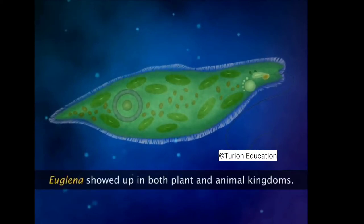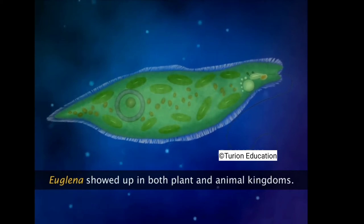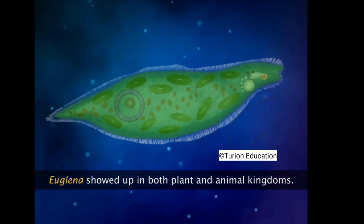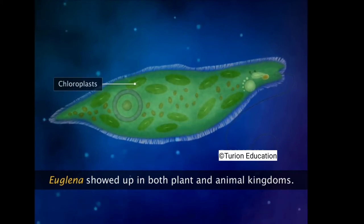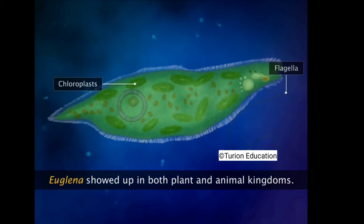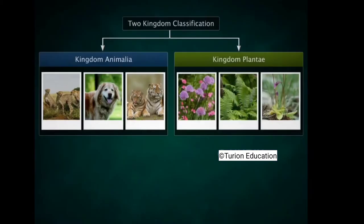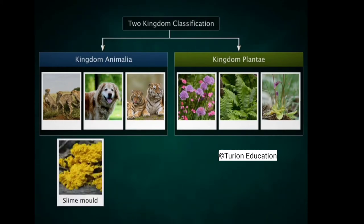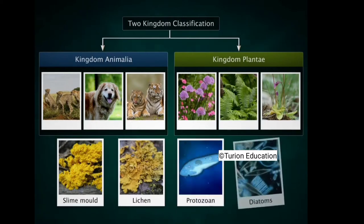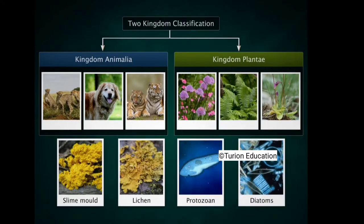In the two-kingdom classification of Linnaeus, microbes such as Euglena showed up in both kingdoms — Plantae and Animalia. Euglena was classified as such because it possessed characteristics of both: it was photosynthetic like plants and could move with the help of flagella like animals. Other organisms such as slime mold, lichens, protozoans, and diatoms could not be classified as either plants or animals.